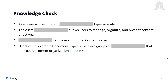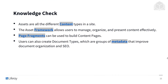Alright, time for a knowledge check. Assets are all the different content types in a site, and the asset framework allows users to manage, organize, and present content effectively. Page fragments can be used to build content pages. Users can also create document types, which are groups of metadata that improve document organization and SEO.